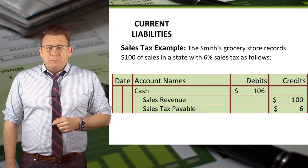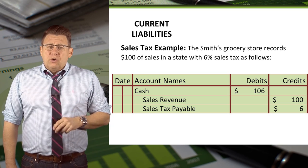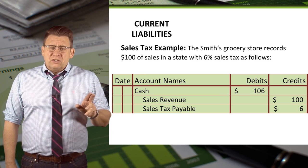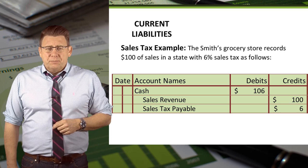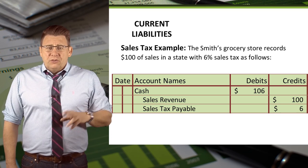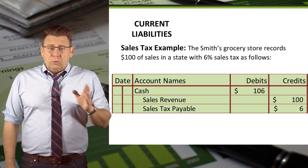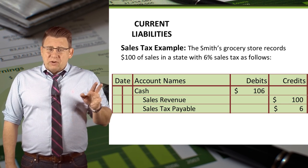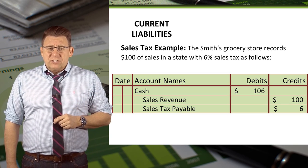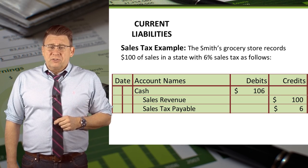Here is an example of that. Assume Smith's grocery store records $100 of sales in a state with 6% sales tax. The journal entry is a debit to cash for $106, which is the amount of revenue plus the sales tax. Sales revenue is credited for $100 and sales tax payable is credited for $6.